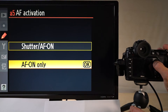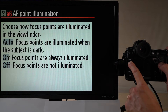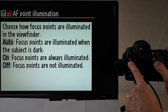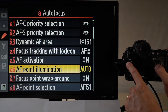Autofocus point illumination can be switched off, switched on, or set to auto — where the focus points are only illuminated when the subject is dark. I have it set to auto, but choose on if you want to always see where the focus points have found focus.